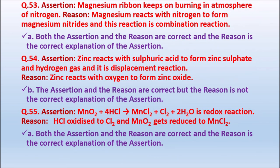Question 53: Assertion: Magnesium ribbon keeps on burning in an atmosphere of nitrogen. Reason: Magnesium reacts with nitrogen to form magnesium nitride and this reaction is a combination reaction. The correct answer is A — both assertion and reason are correct and the reason is the correct explanation of the assertion.